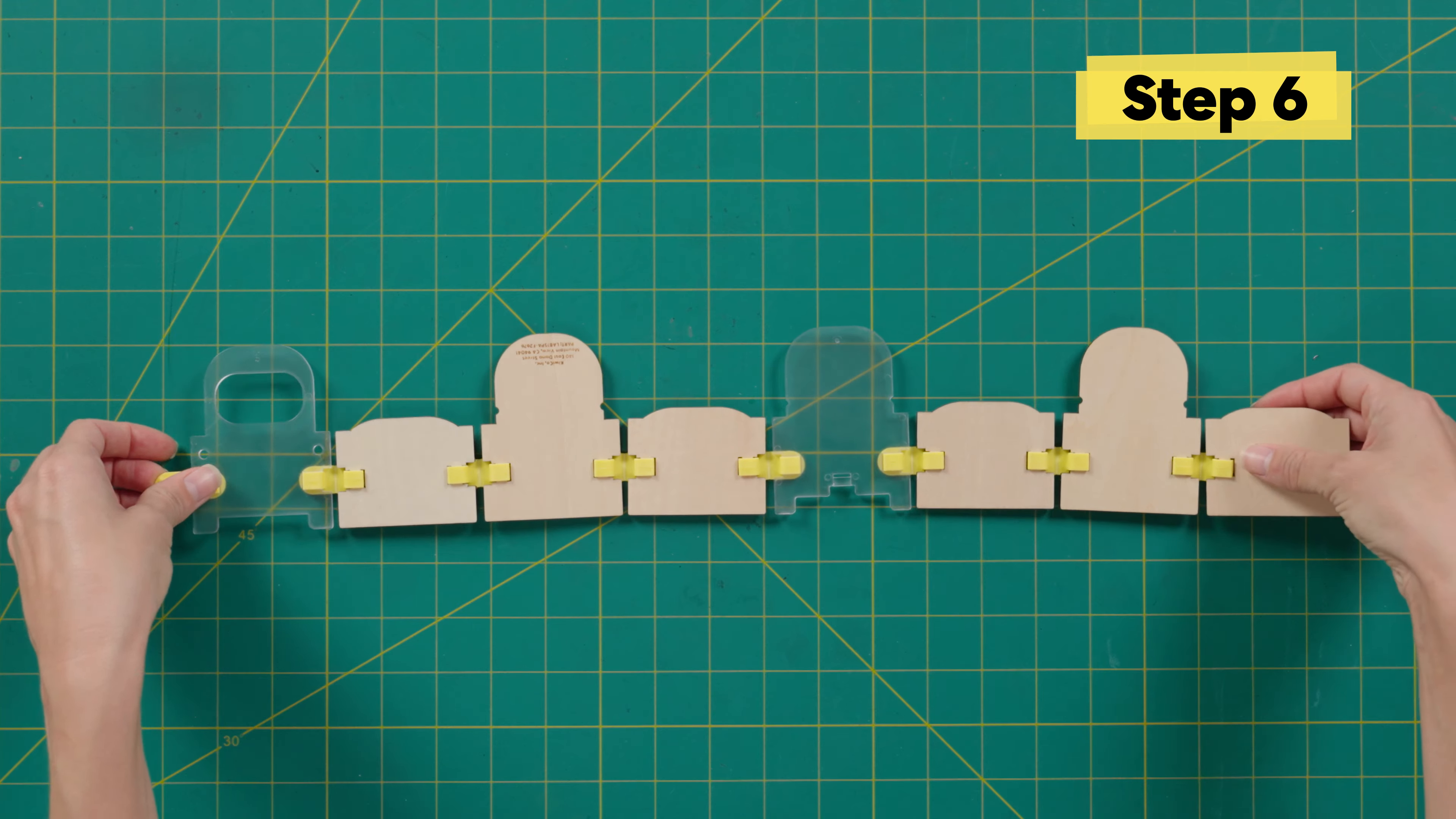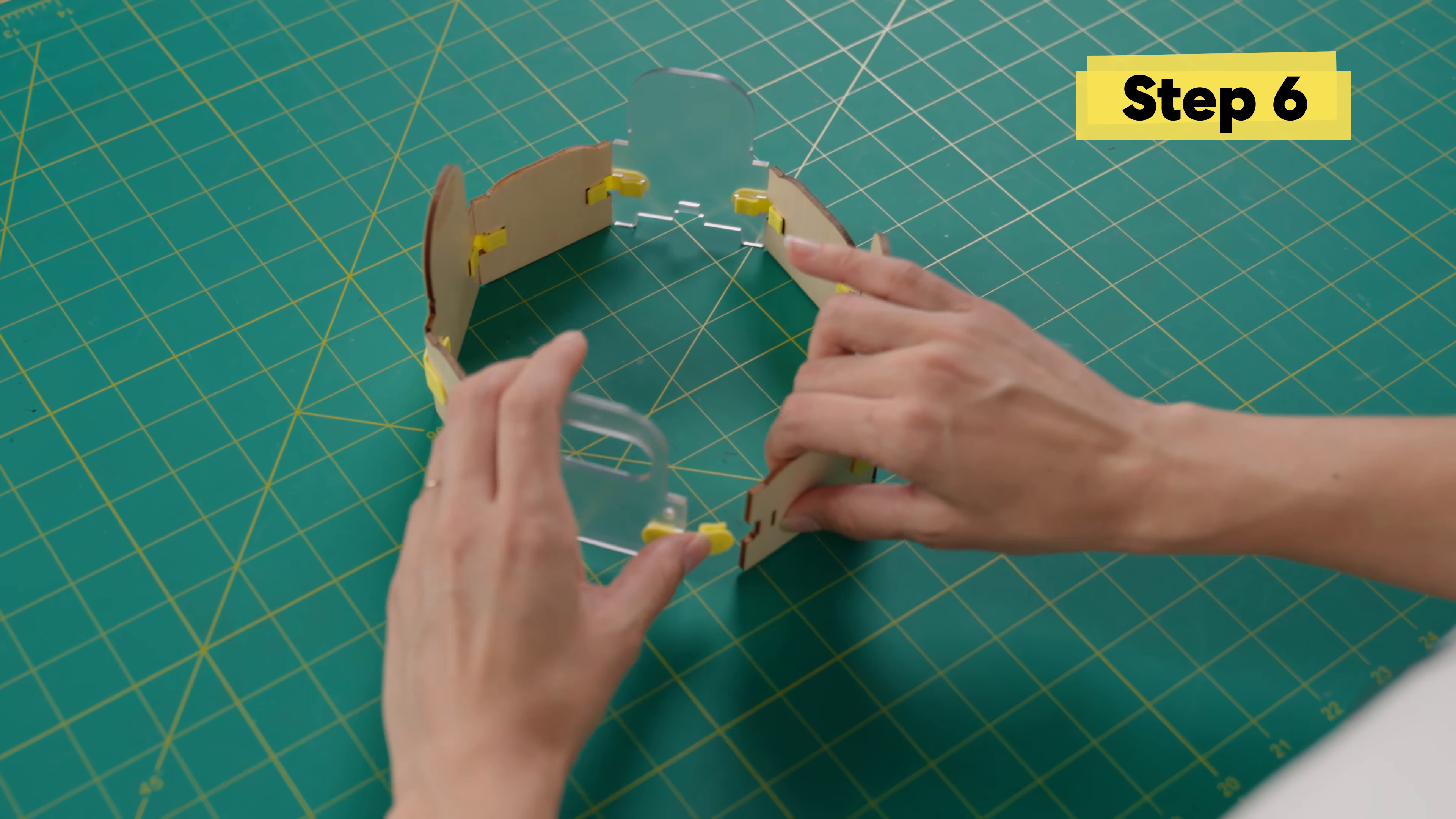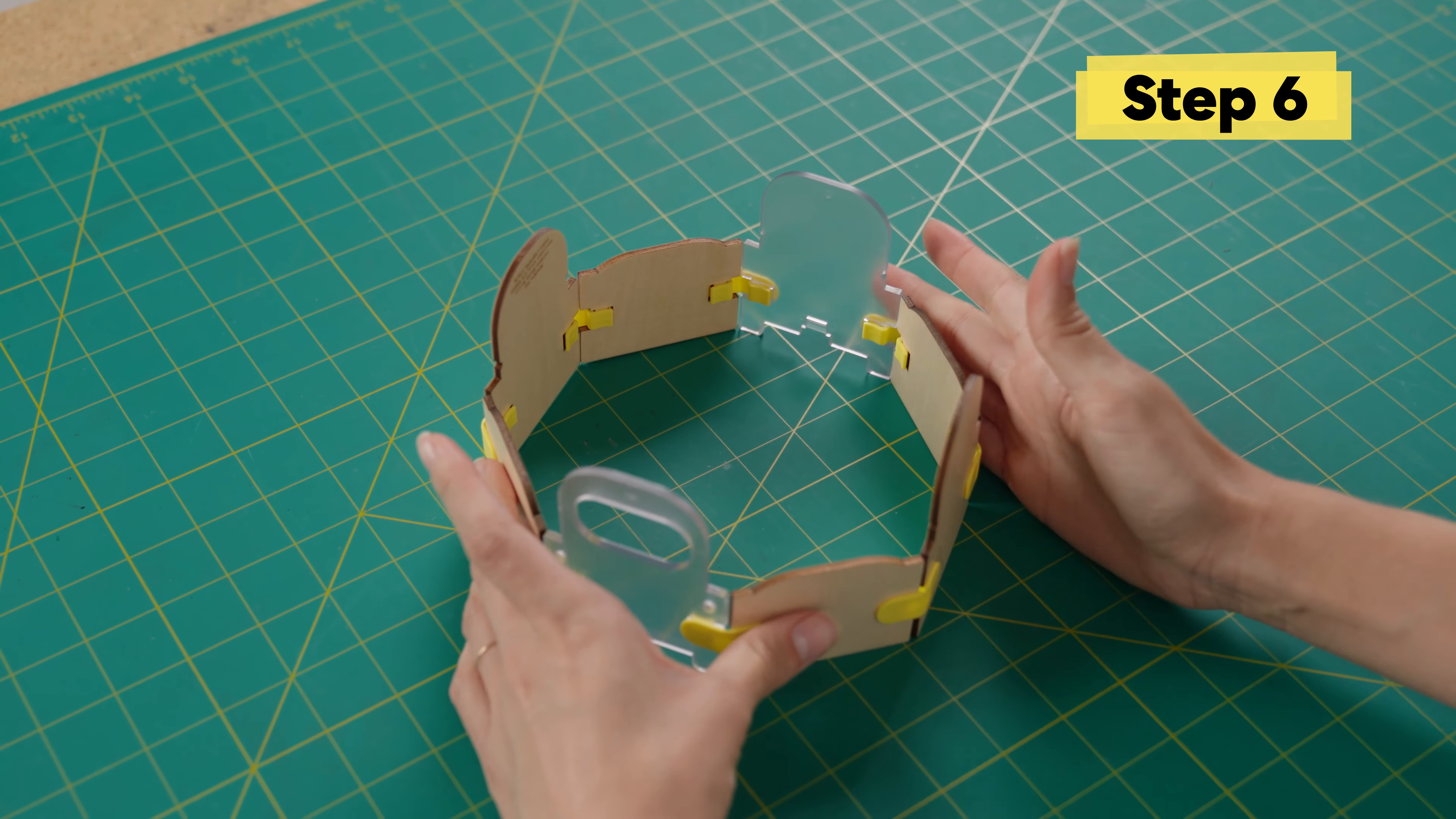Now we take this long connection of walls and we bend it into a circle. Right here, this clip meets the wooden wall. And snap, we have a ring.